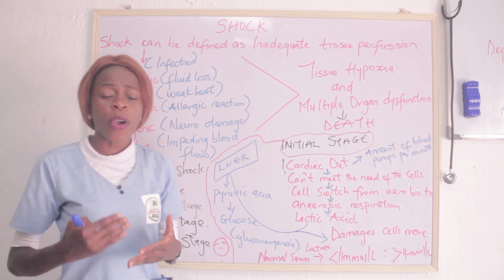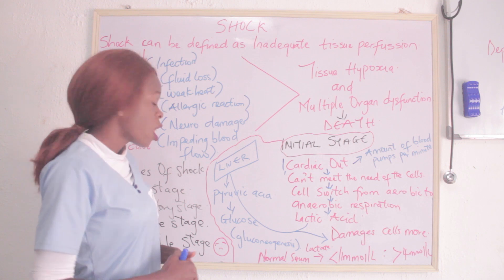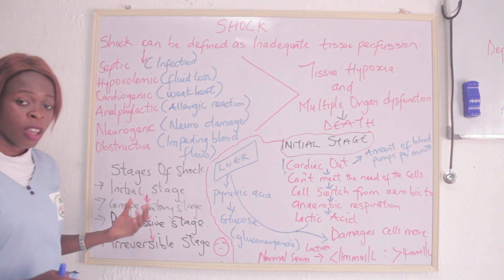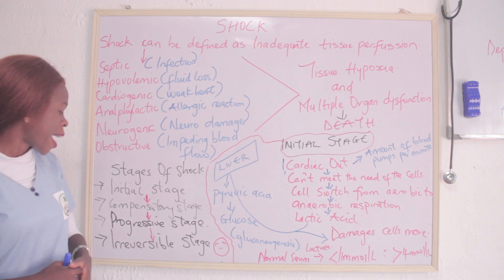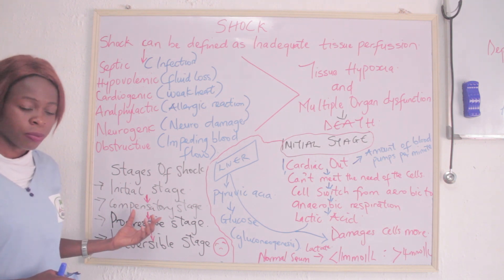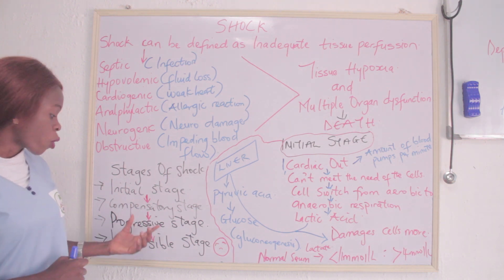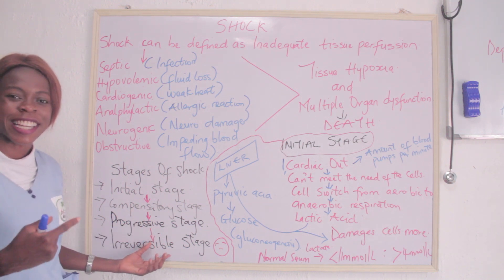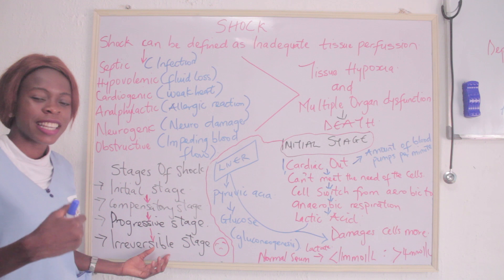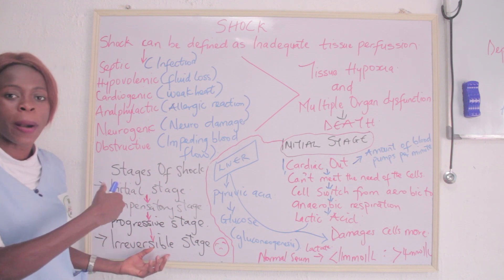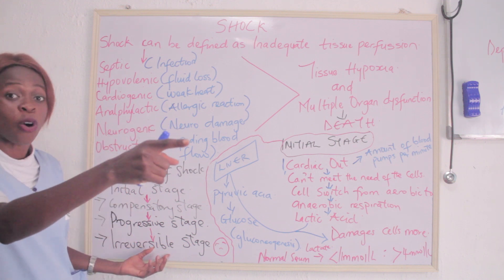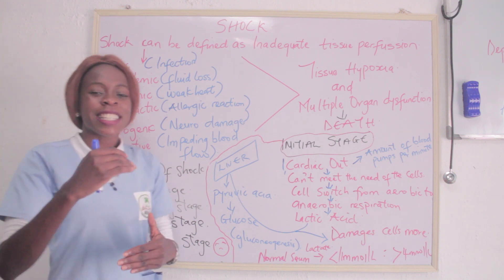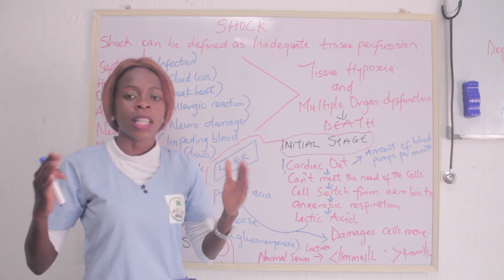That takes us to the various stages of shock. The first is the initial stage, followed by the compensatory stage, followed by the progressive stage, and followed by the irreversible stage. As the name implies, irreversible — it can't go back, it's going forward, and there is nothing you can do about it. We are going to take those stages one after the other.